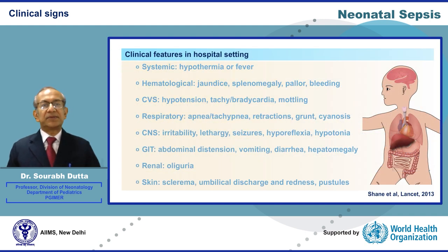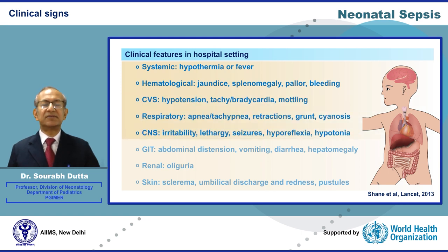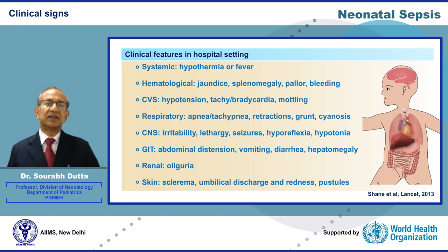Neonatal Sepsis may present with a large variety of clinical signs in hospital settings, present in virtually any organ system. The signs could be systemic, hematological, cardiovascular, respiratory, nervous system related, gastrointestinal, renal, or dermatological. Even this list is not complete — the total list is exhaustive.